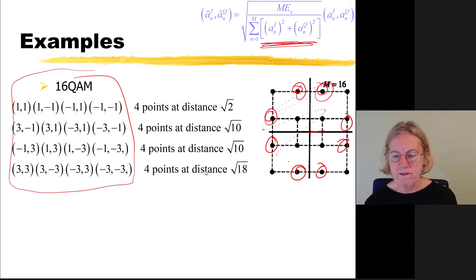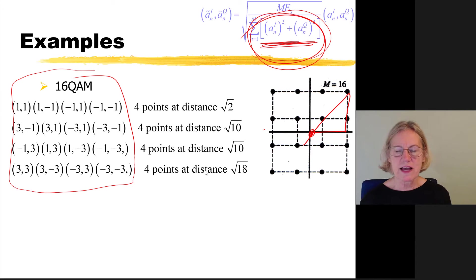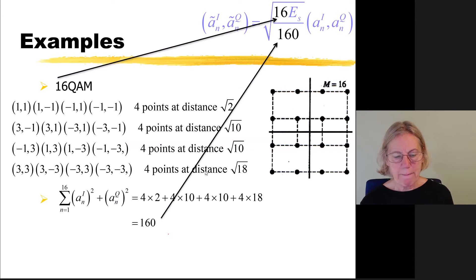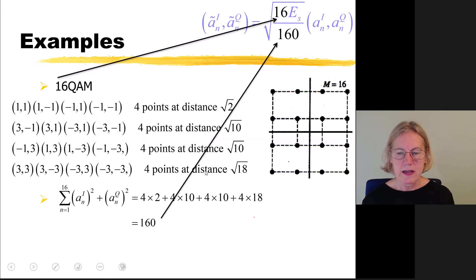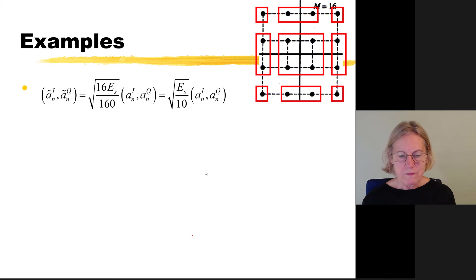And of course, that leaves 4 points, the farthest points, the points in the corners of the constellation. And those, of course, are at a distance of, if I did the math right, the square root of 18. So now I have everything I need in order to calculate this sum inside of this equation. So I go ahead and I add them all up. And I get 160 for the denominator. And of course, if I looked at the top, it was M, and that's just 16. So this is the normalization constant that I use in order to convert from IQ coordinates into signal space coordinates.